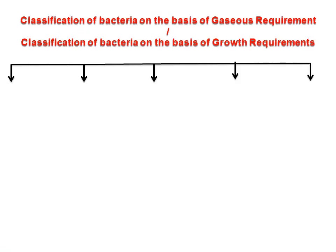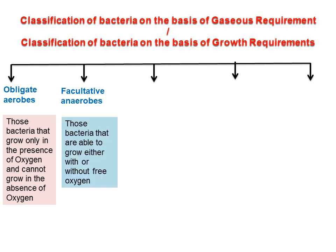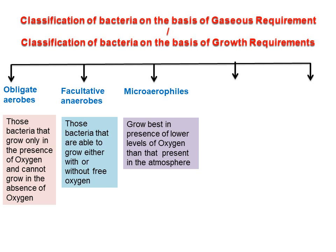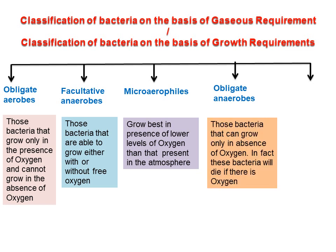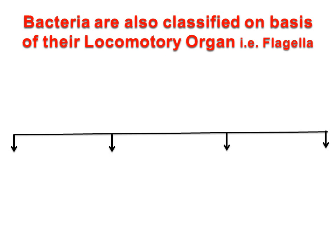Classification of bacteria on the basis of gaseous requirement, or classification on the basis of growth requirements: Obligate aerobes are bacteria that grow only in the presence of oxygen and cannot grow in its absence. Facultative anaerobes are bacteria able to grow either with or without free oxygen. Microaerophiles grow best in the presence of lower levels of oxygen than present in the atmosphere. Obligate anaerobes grow only in the absence of oxygen — in fact, these bacteria will die if there is oxygen. Capnophiles are bacteria that require carbon dioxide for growth; they are carbon dioxide loving.